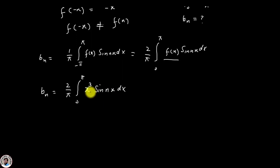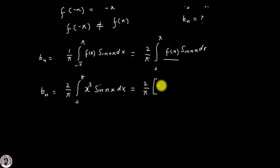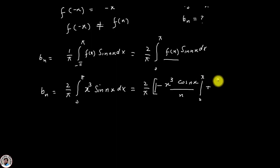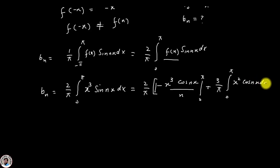Now we apply integration by parts. The integral of sin(nx) gives -cos(nx)/n. So the first term becomes -x³ cos(nx)/n evaluated from 0 to π, plus the remaining integral (3/n) ∫₀^π x² cos(nx) dx, giving us (2/π) times these terms.